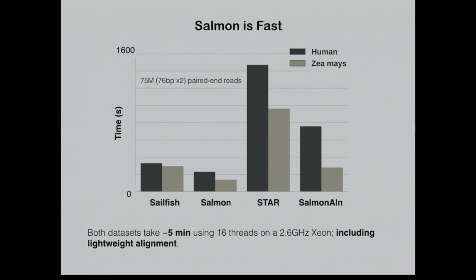Lastly, Salmon is quite fast — actually faster than Sailfish, whose main reason for existence was speed. To some extent, all of these methods are fast now. A few years ago RNA-seq analysis was taking six to ten hours per sample; now Salmon takes about five minutes per sample and Kallisto is also very fast. The speed problem has been largely solved.